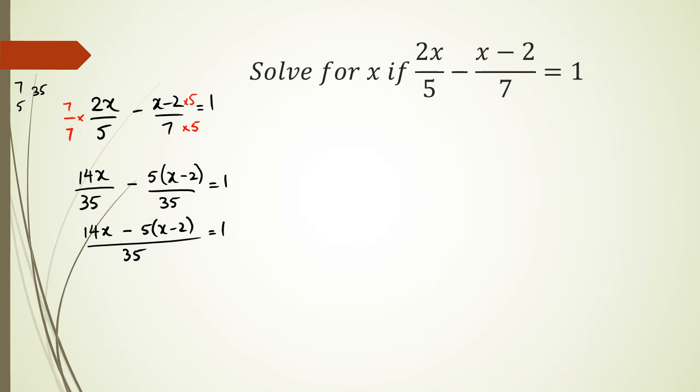So rearranging this, or getting rid of the 35 to the right-hand side, you're going to get 14x minus 5 times x minus 2 equals 1 times 35, or I could just leave it as just 35.